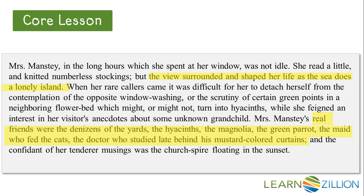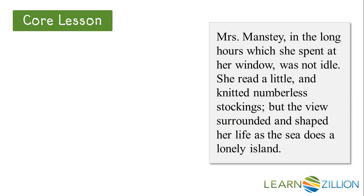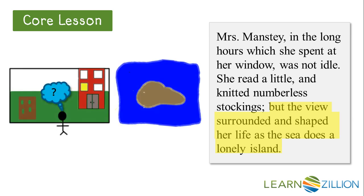Now that I've highlighted details about the setting, I'm ready to move on to the second step: how do these descriptions relate to the character? Looking at the first section, I can tell that, like a sea which separates an island from the rest of the world, Mrs. Manstey's obsession with the view out of her room separates her from the outside world. She would rather sit by herself, looking out of her window, than converse with her visitors. This obsession with her view is causing her self-isolation.